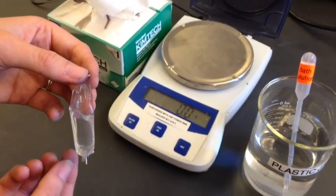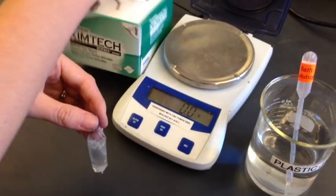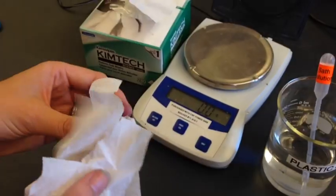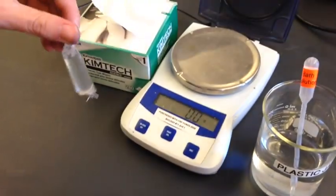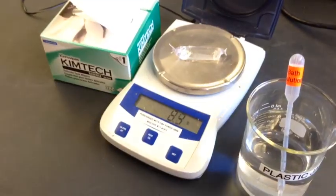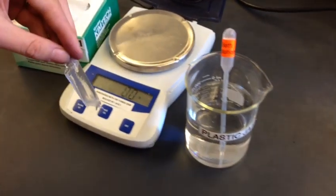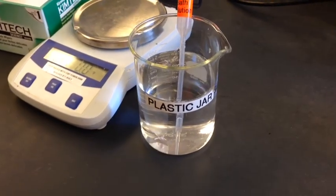After trimming the strings off the dialysis bag, you need to dry and weigh it. Use a Kimwipe to pat down the outside until it's completely dry, then put it on the scale and record the weight. When your instructor gives you the go-ahead, drop it into your plastic jar with the bath solution.